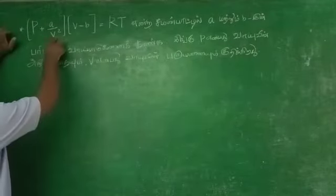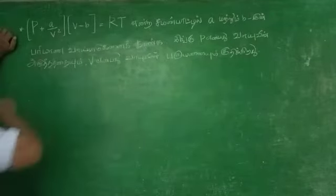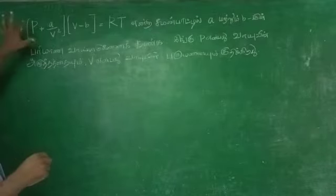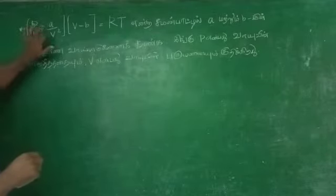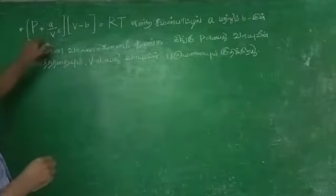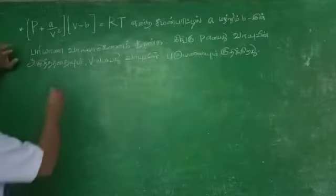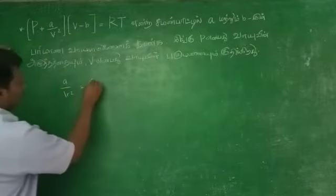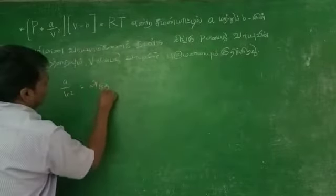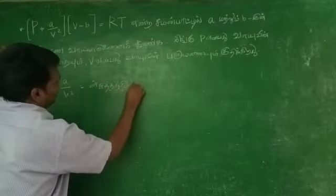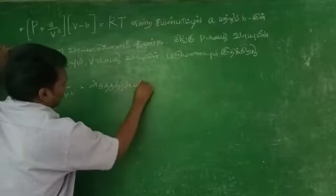This is PV. If you have one element, then the element of the element will be the element. If you have this element, the element will be the element.